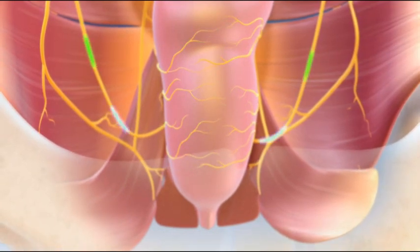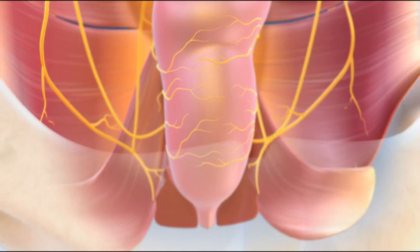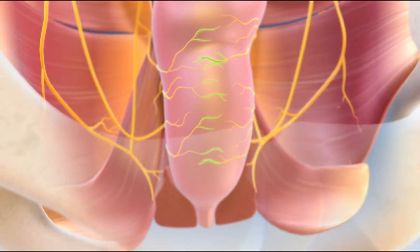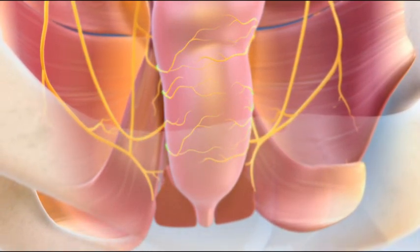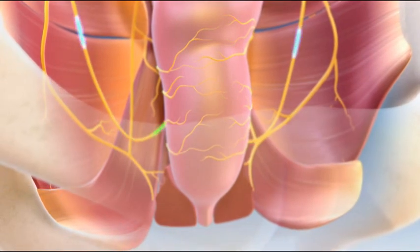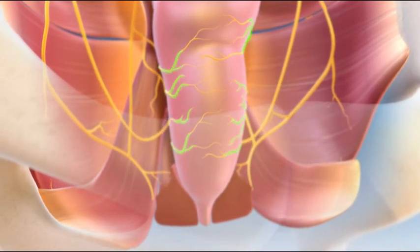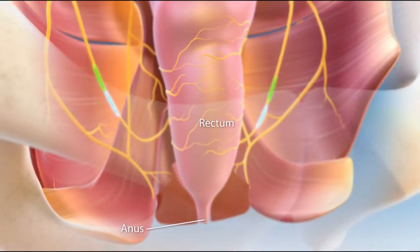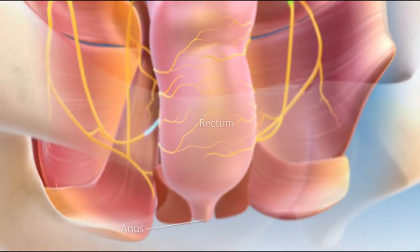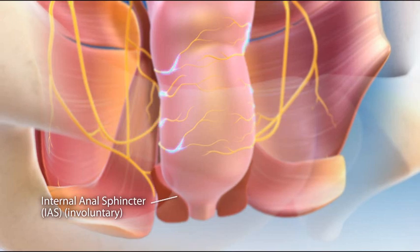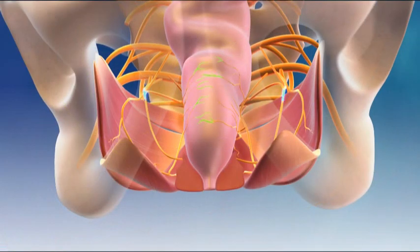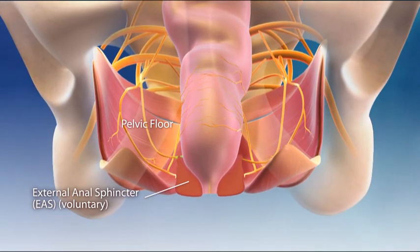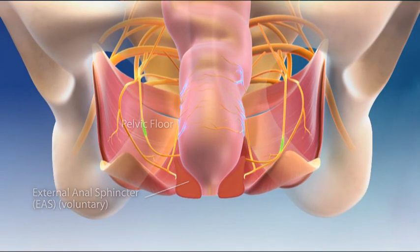As the rectal wall distends with feces, the sensation is communicated along afferent nerve fibers to the spinal cord and brain via sympathetic and parasympathetic pathways. The parasympathetic fibers, which contain both efferent and afferent fibers to the lower, or distal, colon, stimulate motility and cause strong contractions of the rectum, while sympathetic fibers inhibit motility. The evacuation reflex initiates efferent action potentials, causing the internal anal sphincter to relax, allowing movement of contents.